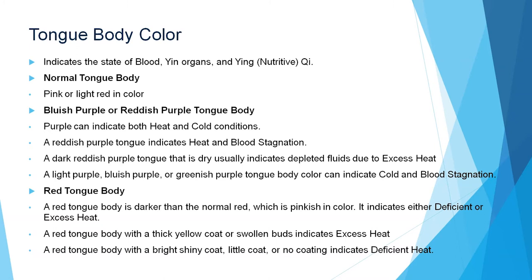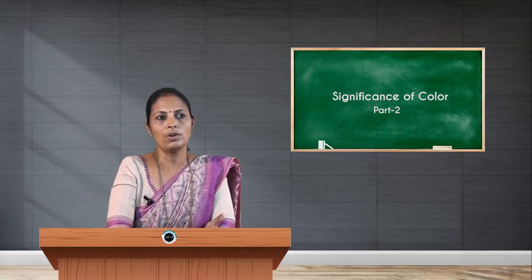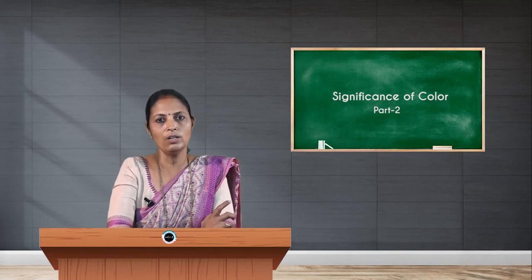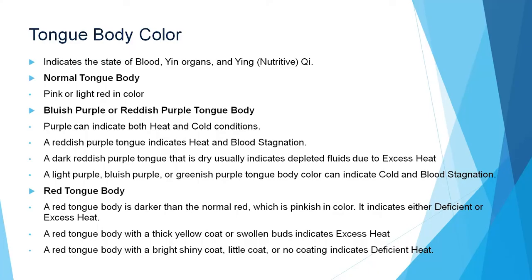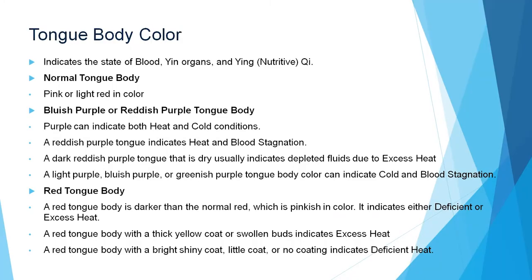A bluish-purple or reddish-purple tongue body mainly indicates heart and cold conditions. In cold conditions, there is constriction of blood vessels, which is represented by bluish discoloration. In TCM, purple color indicates disturbance in both heat and cold conditions. Reddish-purple indicates heat and blood stagnation, whereas purple indicates heat and cold excess.